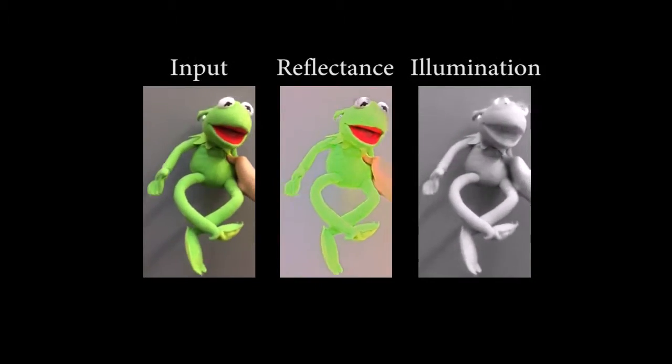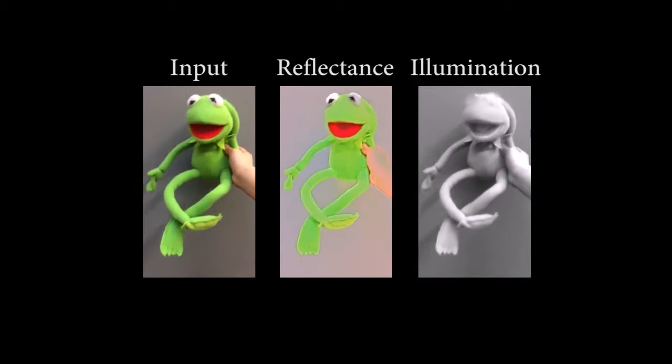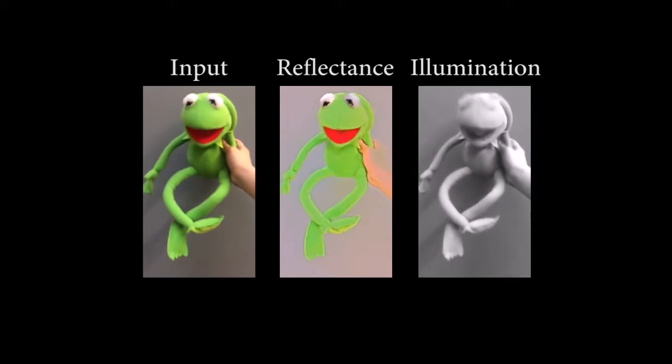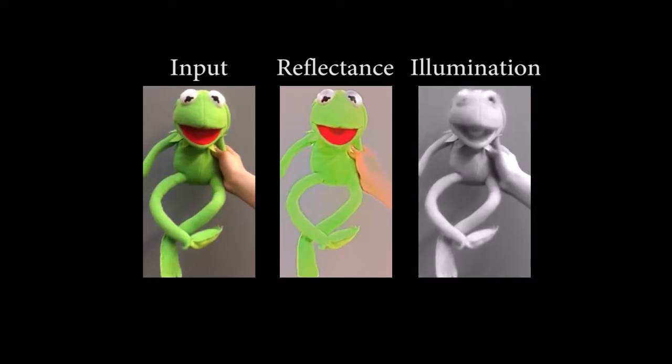In this example, Kermit creates complex shadows against a nearby wall and our method successfully separates these into the illumination layer.